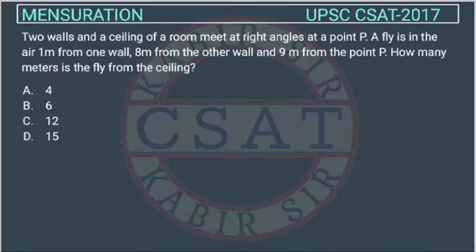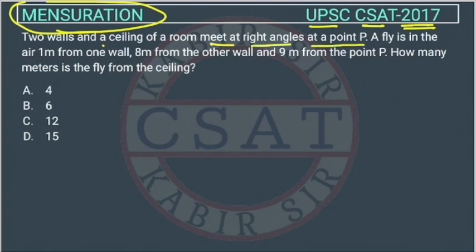This is a question from mensuration chapter asked by UPSC in CSET paper of 2017. Two walls and a ceiling of a room meet at a right angle at a point P. There are two walls. Suppose there are two walls like this. This is a room.